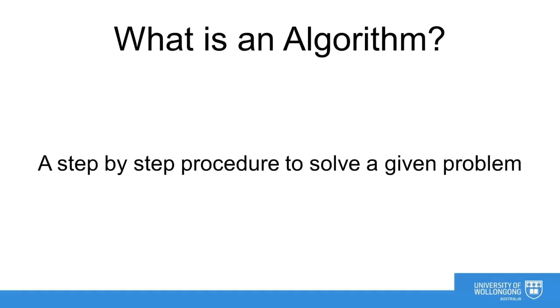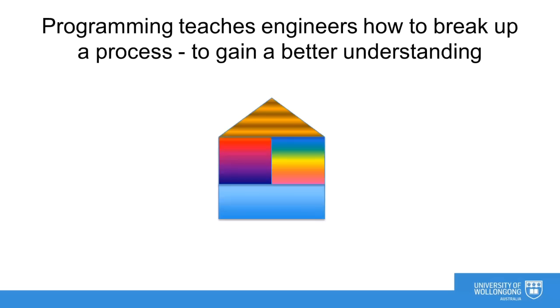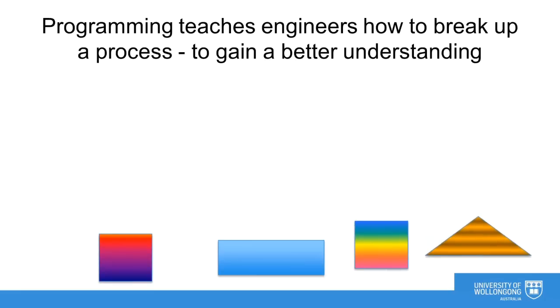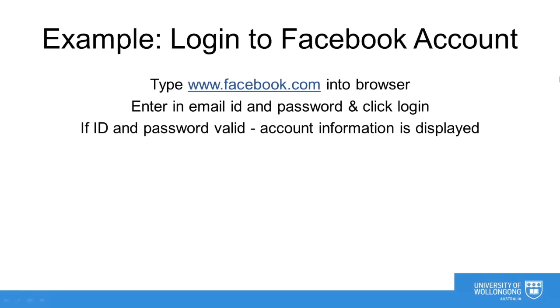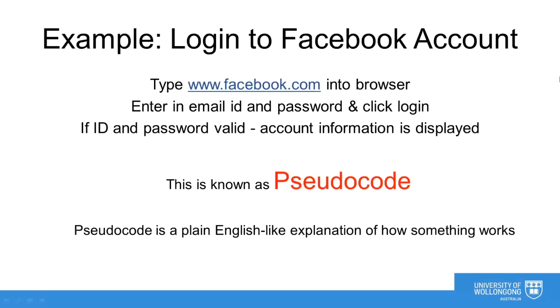An algorithm is a step by step procedure to solve a given problem. Programming is developing your skills in taking a process and breaking it up into many smaller ones. The algorithm we wrote for logging into Facebook is known as pseudocode. Pseudocode is very simply a plain English like explanation of how something works.